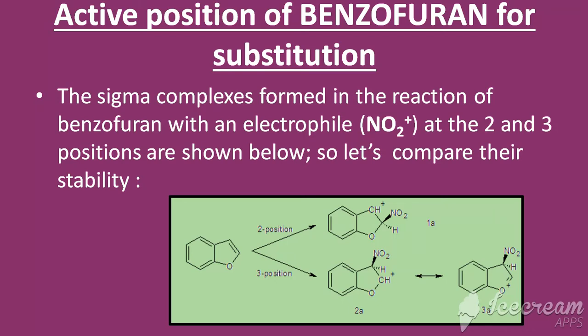Attack at position 2, that is the alpha position of benzofuran, produces a sigma complex where the positive charge is nicely stabilized by benzene ring which is shown in 1a.